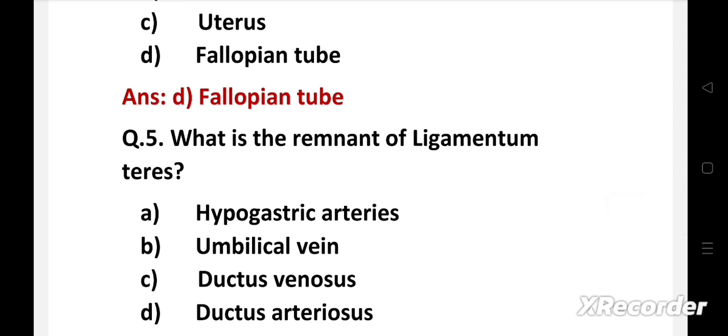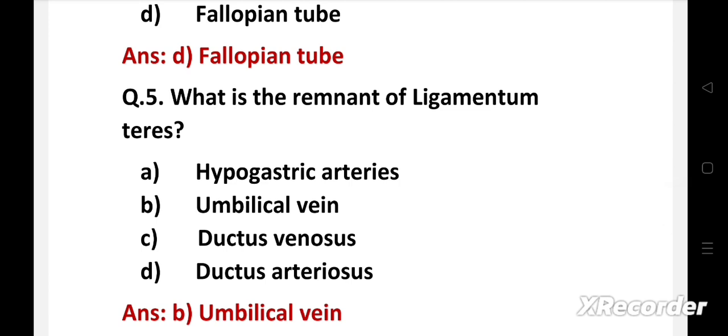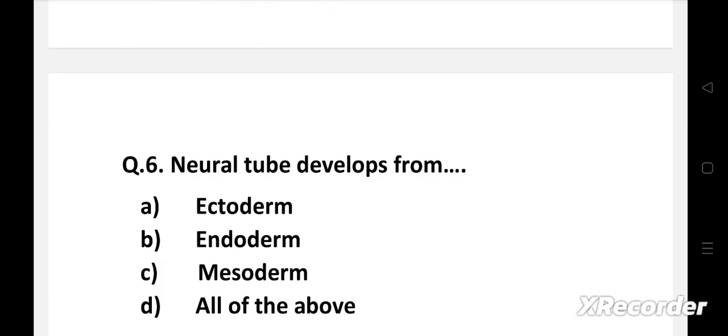Next question. What is the remnant of ligamentum teres? Option A: hypogastric arteries, B: umbilical vein, C: ductus venosus, D: ductus arteriosus. Right answer is option B: umbilical vein. The ligamentum teres is the remnant of umbilical vein.